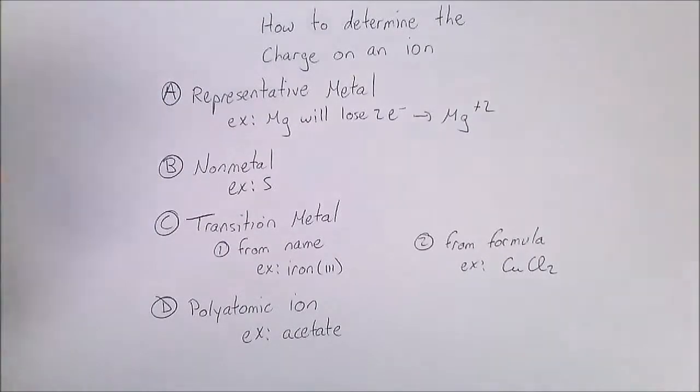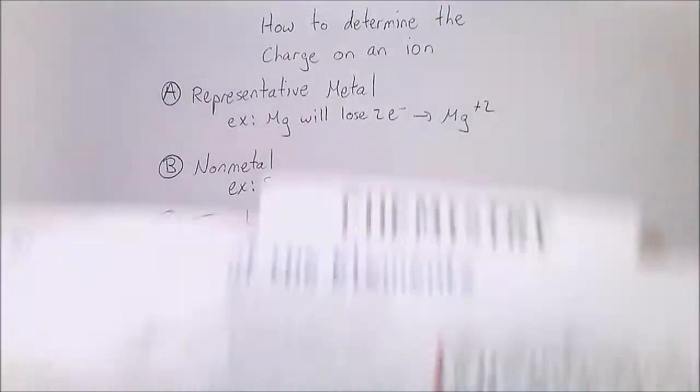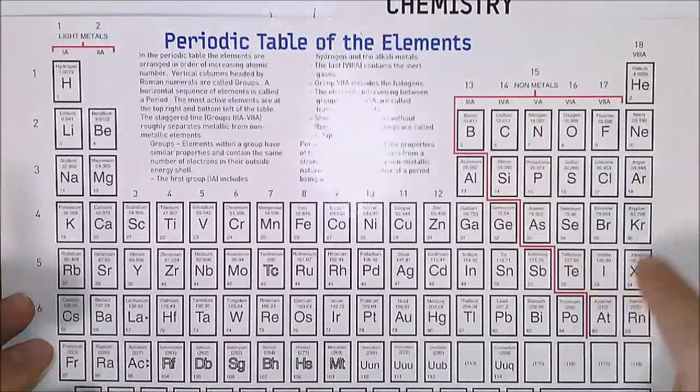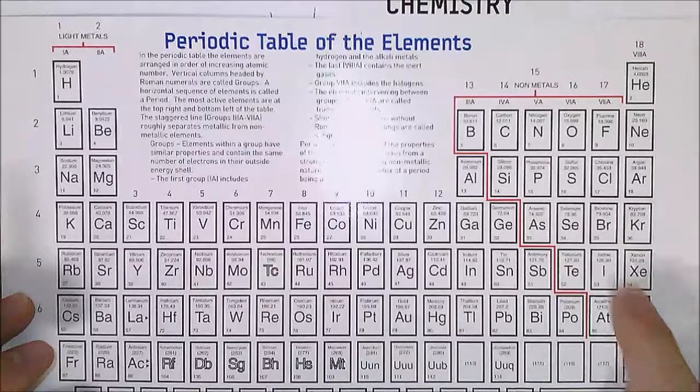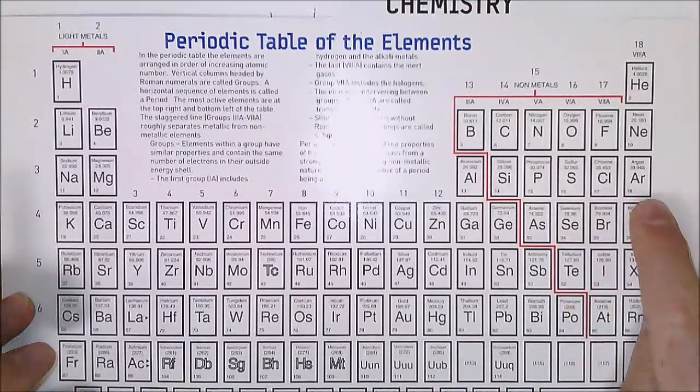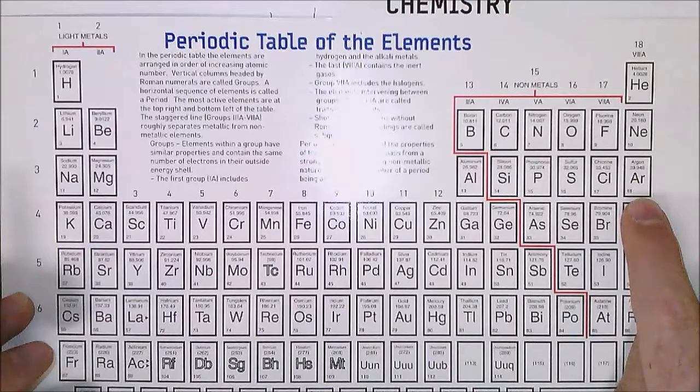Very similar for non-metals. Non-metals are to the right of the staircase and sulfur is here. It is two columns away from its nearest noble neighbor, argon.